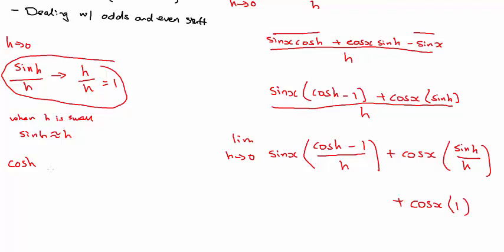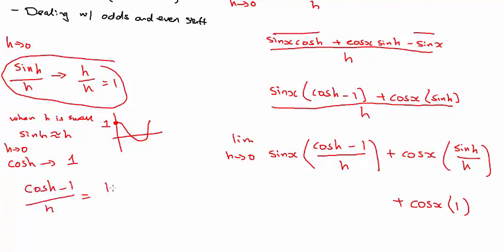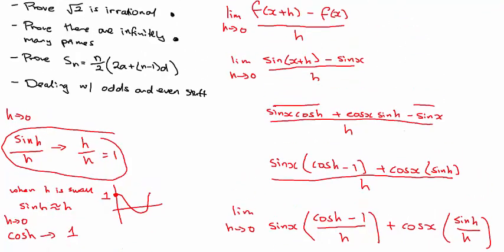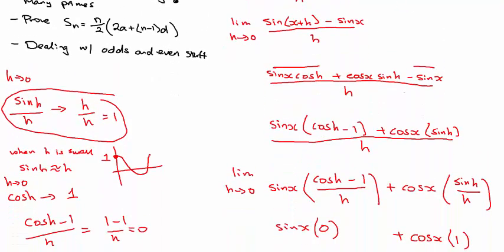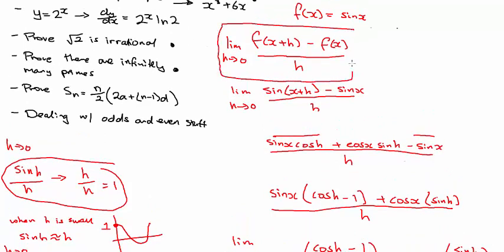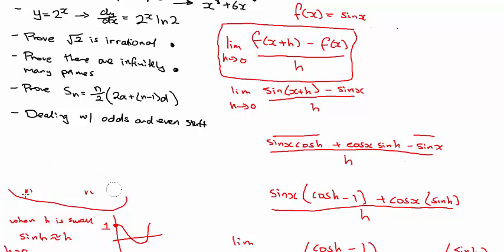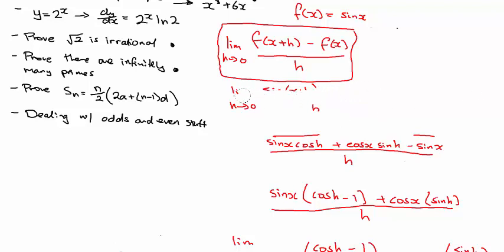For the cos h part: as h tends to zero, cos h tends towards one, because the cos graph starts at one at zero. So cos h minus 1 over h becomes 1 minus 1 over h, which equals zero. So the sin x term multiplied by zero disappears, leaving just cos x times one, which is cos x. That's how you prove sin x differentiates to cos x from first principles. The cos x case is very similar.